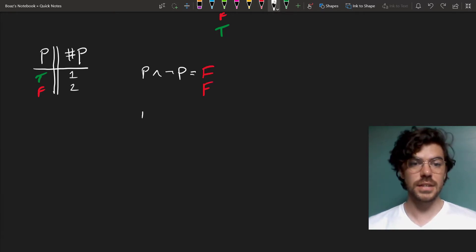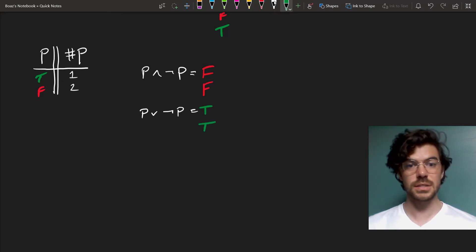On the other hand, if we want to turn hashtag P into the operator that makes P true always, so takes any truth value of P and turns out T, we would just treat it as equivalent with P or NOT P, which gets us TT.